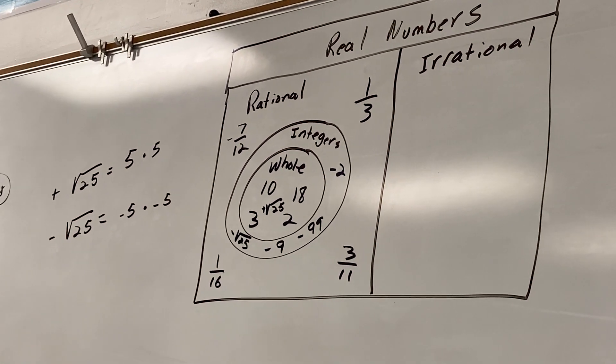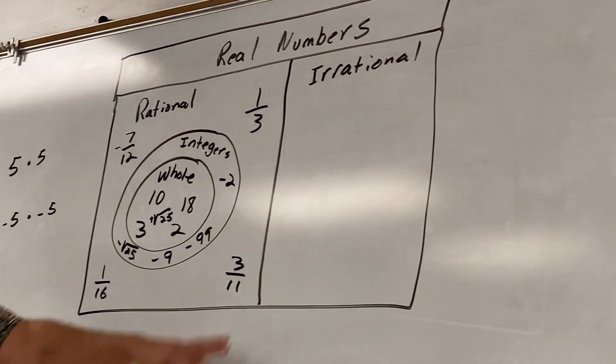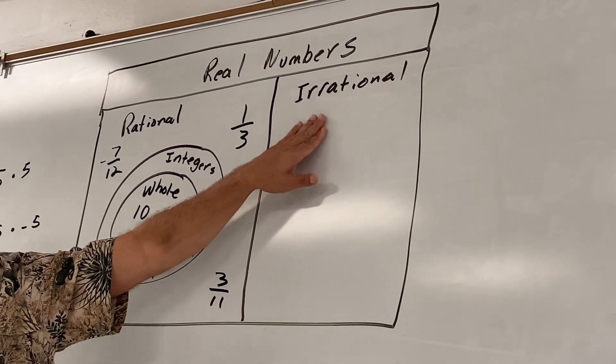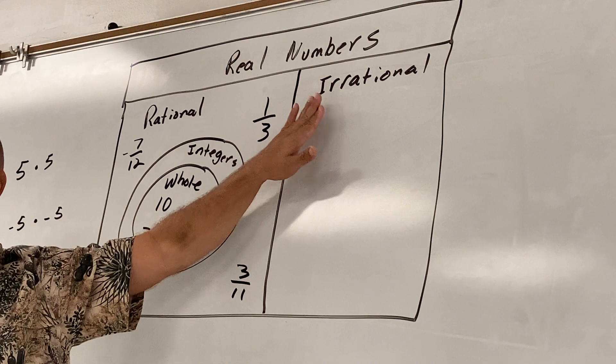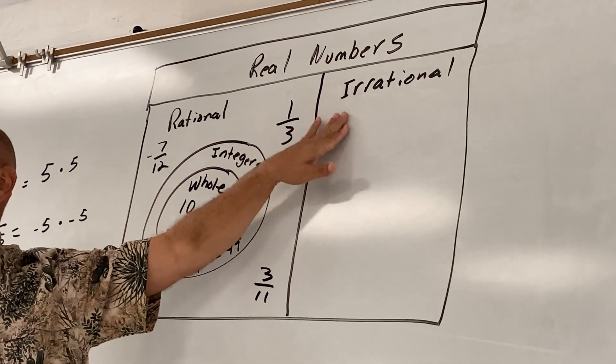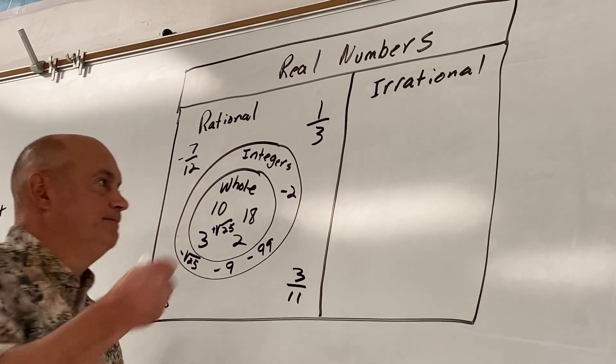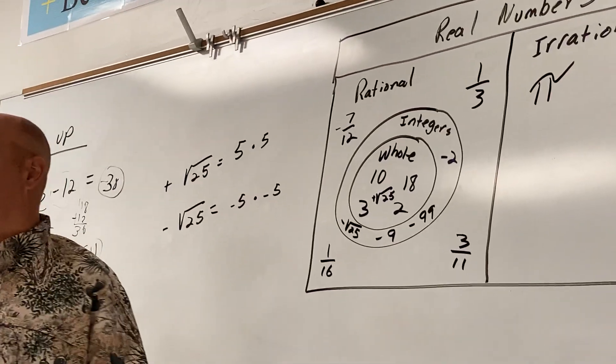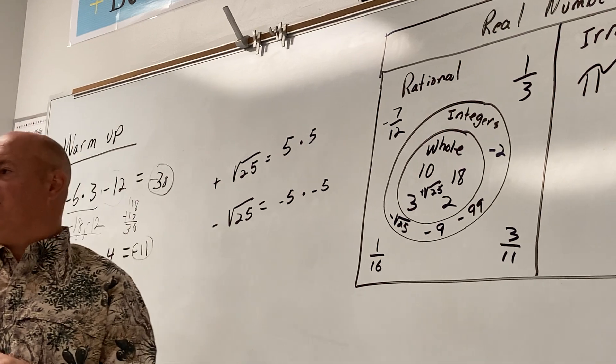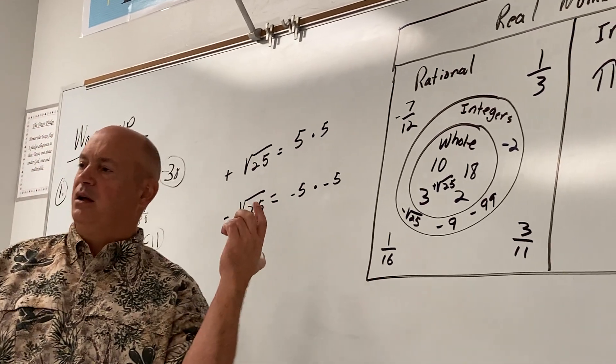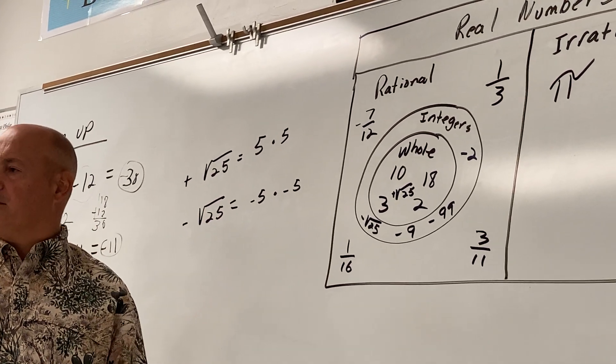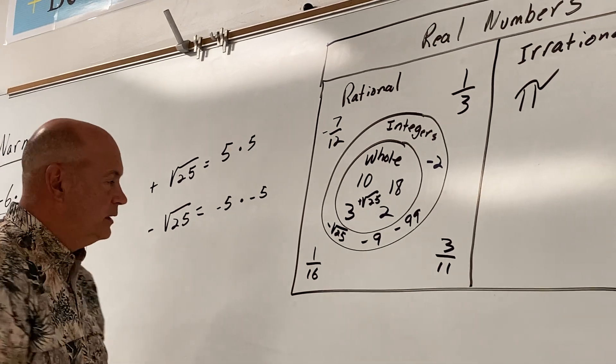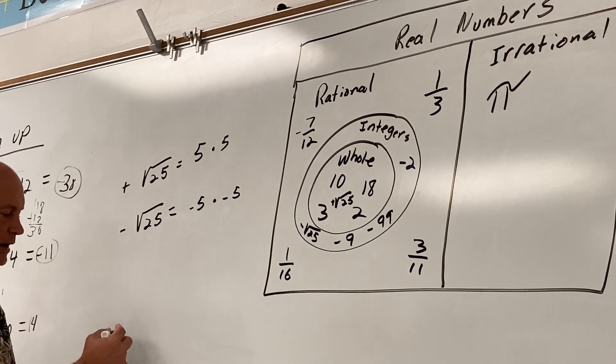Let's jump over to the irrational column. Somebody give me an example of an irrational number. What's the famous one? Who remembers the famous one? Katie. Pi. Pi is the famous irrational number. Or does anybody remember another one? I'll give you one. Hang on. Let's do one more.